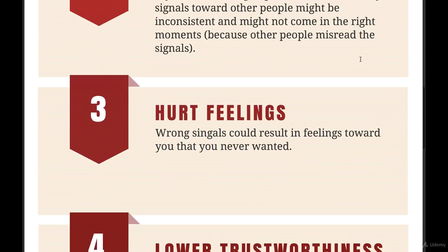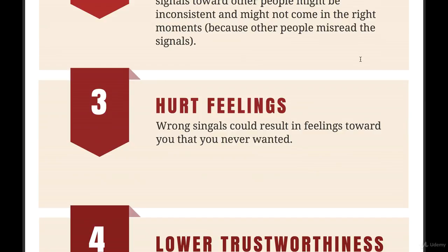Number three is hurt feelings. Wrong signals could result in feelings toward you that you never wanted. For instance, if you always seem angry but you're actually happy, people wonder: why is this person always angry, always so unfriendly? If you're doing something with your eyes or moving in a certain way and you seem angry, other people will think this person's angry and won't want to talk to you. People inside your company might actually get hurt in terms of their feelings. Feelings really do matter in a company, especially if you want to work with people long-term — because we want to build trust, and from that trust comes speed.